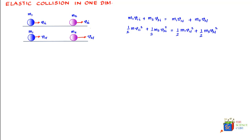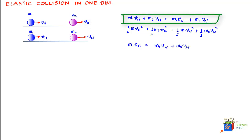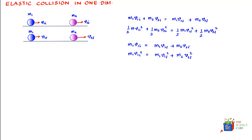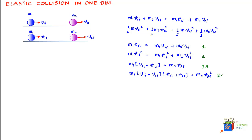Now let's take a special case where m2 was stationary before the collision, i.e., v2_initial = 0. The momentum equation simplifies by dropping the m2·v2_initial term, and similarly for the kinetic energy equation. Calling these equations 1 and 2, and rewriting them as equations 1a and 2a, dividing 2a by 1a and doing some algebra gives: v1_final = ((m1 − m2) / (m1 + m2)) · v1_initial.